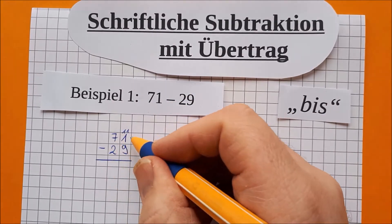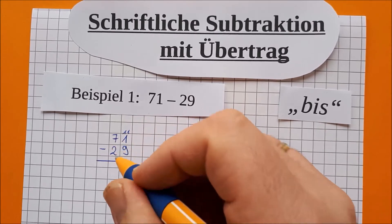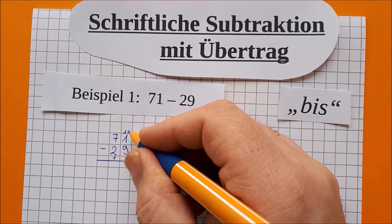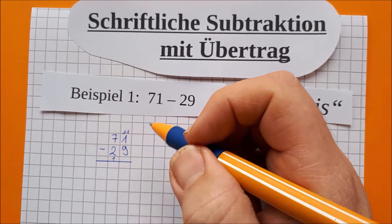Und wir tun nicht nur zur ersten Zahl 10 dazu, sondern auch zur zweiten Zahl tun wir 10 dazu. Das machen wir hier aber als ein Zehner, 10 Einer und ein Zehner. Wisst ihr, ist das Gleiche. Und ihr wisst auch, wenn ich oben 10 dazu tue und unten 10 dazu tue, bleibt das Ergebnis gleich.